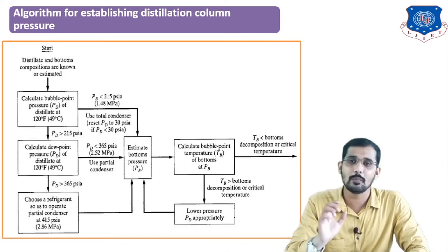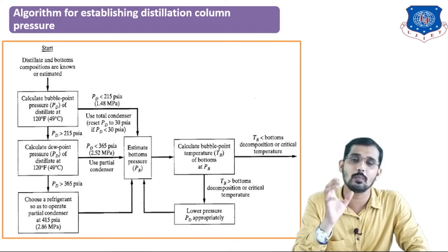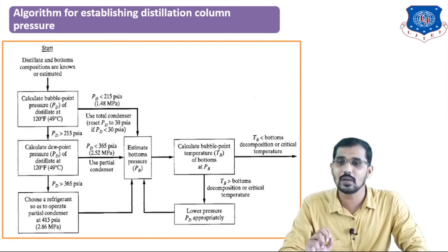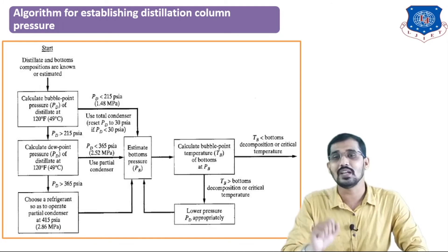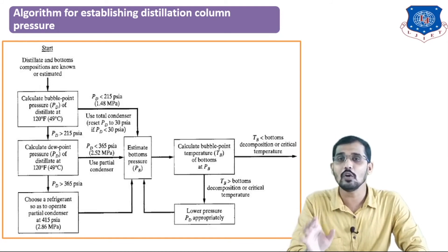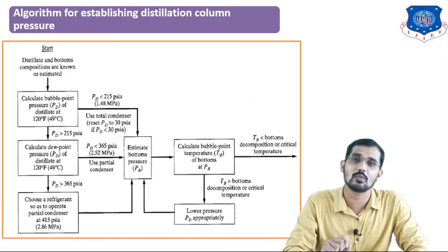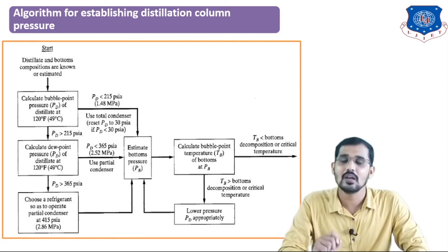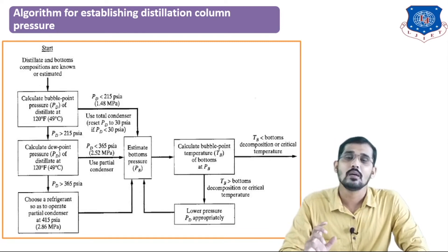You calculate the dew point pressure of the distillate at 49°C. If the bubble point pressure was less than 215 psi, you go to the next step — calculation of the bottom pressure. But if Pd is greater than 215 psi, you calculate the dew point pressure at 49°C. After that, you again check that Pd value: if the dew point pressure is less than 360 psi, you go to estimation of the bottom pressure. But if it is also greater than 365 psi, you proceed to choose a refrigerant — a coolant used to minimize and maintain the operating pressure.